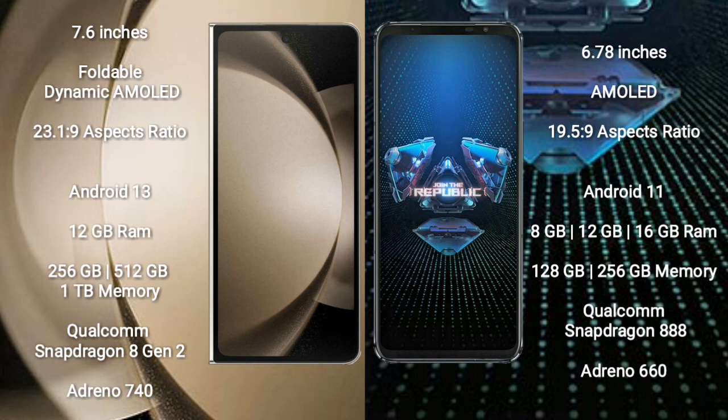Samsung Galaxy Z Fold 5 comes with 12GB RAM and 256GB or 1TB internal storage, Qualcomm Snapdragon 8 Gen 2 processor and GPU Adreno 740. Asus ROG Phone 5 comes with 8GB, 12GB, or 16GB RAM and 128GB or 256GB internal storage, Qualcomm Snapdragon 888 processor and GPU Adreno 660.